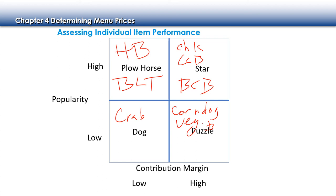We could have servers recommend items — instead of 'veggie burger,' pitch it as a 'southwest black bean burger,' which sounds more enticing. Put a table tent advertisement for those items, and on the next analysis they may creep up to star status. Menu items that make us a lot of money deserve highlighted attention — like those little star icons on a menu that say 'guest favorite.' That's menu engineering drawing your eye to the profitable items.